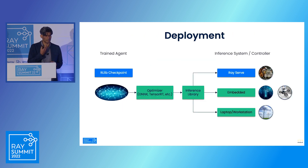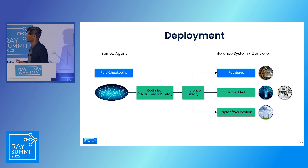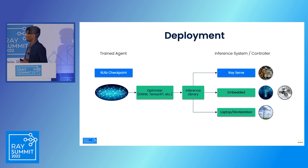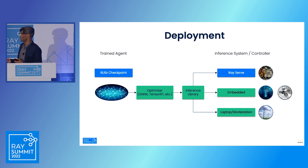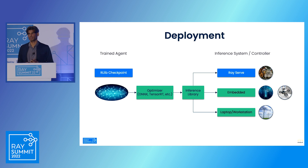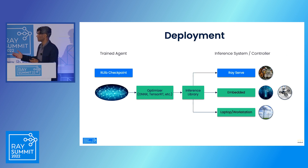Once you have the trained agent, deployment depends on the application and target hardware. In a manufacturing setting, latency is not a big issue, so you can use Ray Serve to serve your trained model. But for applications requiring low latency — for example, planning flight paths for drones with collision avoidance — we optimize the RL agent using ONNX or TensorRT. And for situations where the workstation is not connected to the internet, such as in power plants with regulatory requirements, you can deploy directly on standalone hardware and control your power plant without internet connectivity.